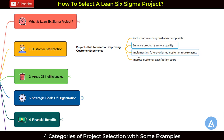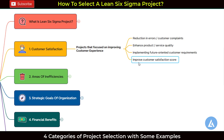This category also covers implementing future-oriented customer requirements. Altogether, if you track the customer satisfaction score, it is inclusive of all these. The ultimate goal is improving the customer satisfaction index. If you are selecting a project for Lean Six Sigma, that must be your primary goal — selecting a project related to customer satisfaction. If there are no issues with customer satisfaction, then go to the second category.